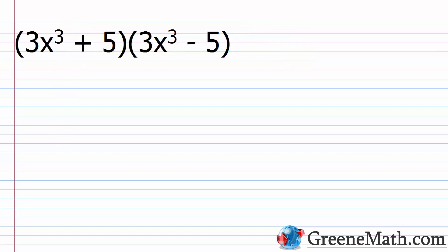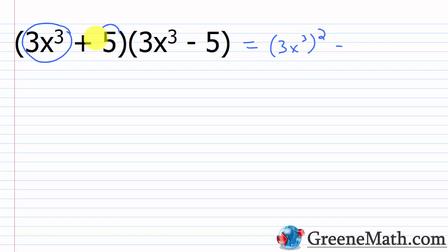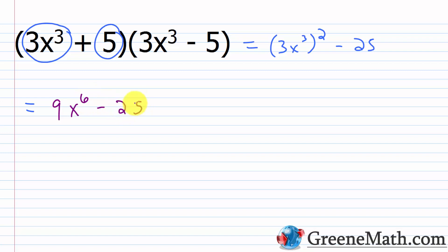Let's take a look at another one: 3x³ plus 5 multiplied by 3x³ minus 5. Square the first guy — I'm squaring 3x³, the whole thing — then minus, squaring 5, which is just 25. Squaring 3 gives 9, and squaring x³ using the power-to-power rule gives x⁶. So the answer is 9x⁶ minus 25.